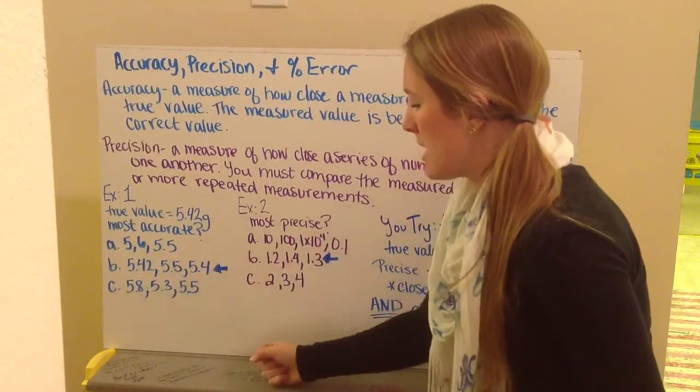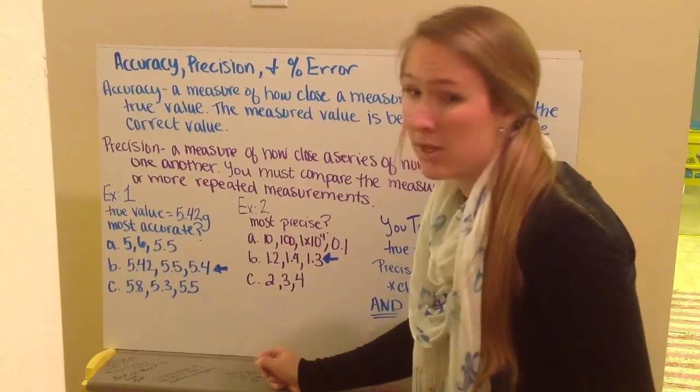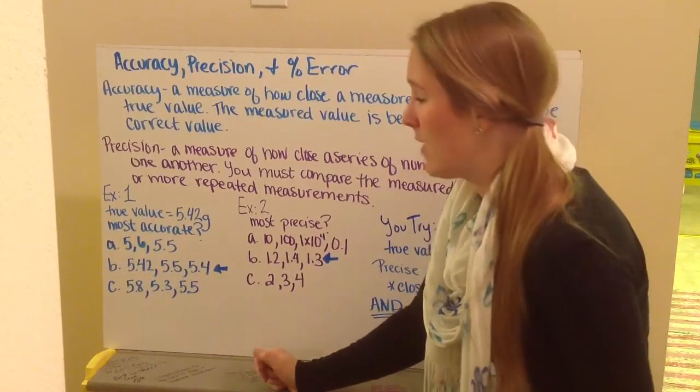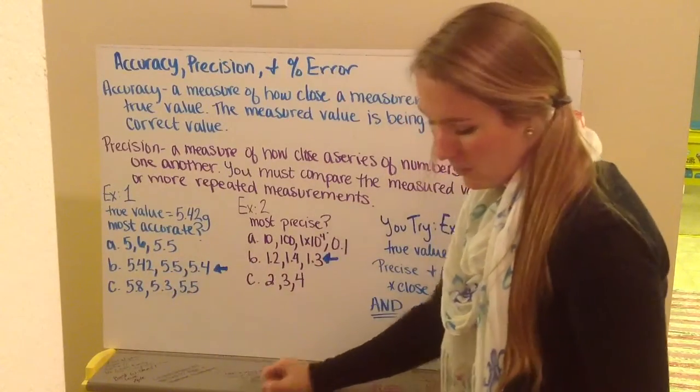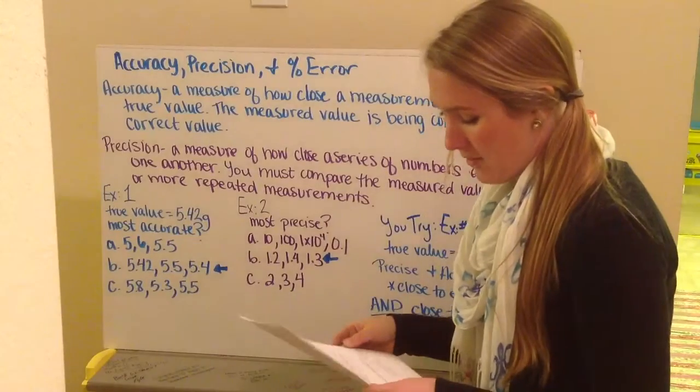Well, choice B has the values that are closest to my accepted value. Therefore, these are going to have the most accurate reading, or they're going to be the most accurate set of numbers.